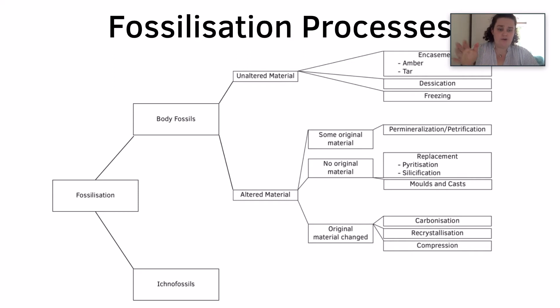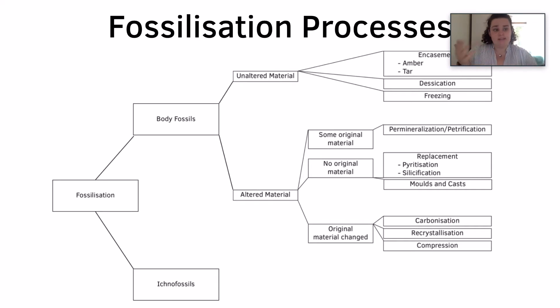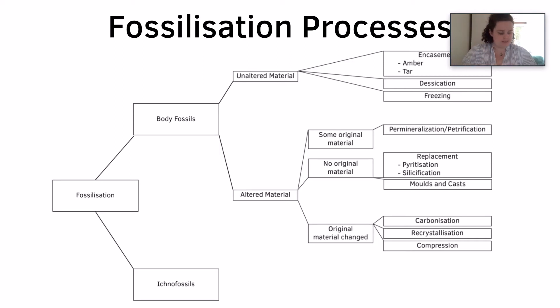For example, permineralisation can also happen alongside a mould and a cast. These aren't just limited to one process — each one does not occur on one fossil alone; it can be a numerous mix of processes.